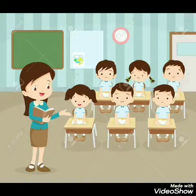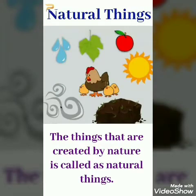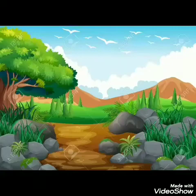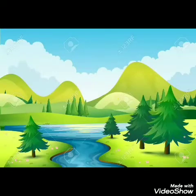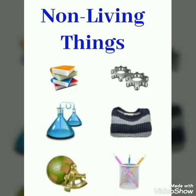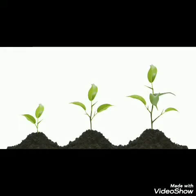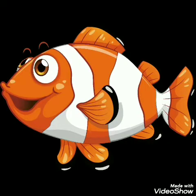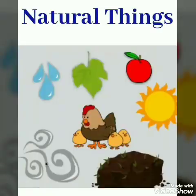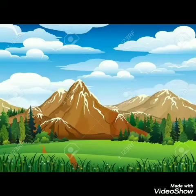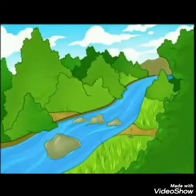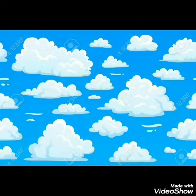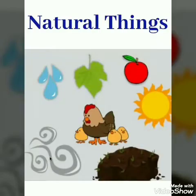Next we are going to see about Natural Things. The things that are created by nature are called natural things. Nature provided us many things including living as well as non-living things. Plants, animals, birds, fish and human beings are natural things. Certain non-living things like mountains, rivers, clouds, and rain are also natural things.